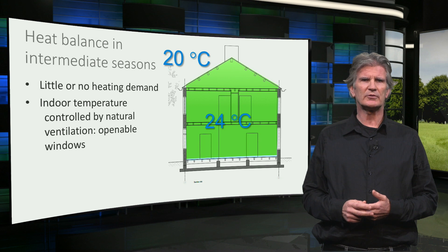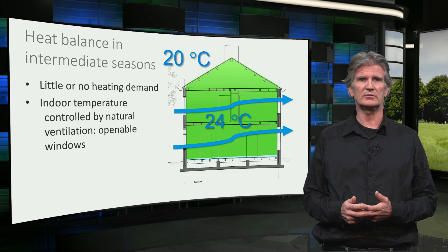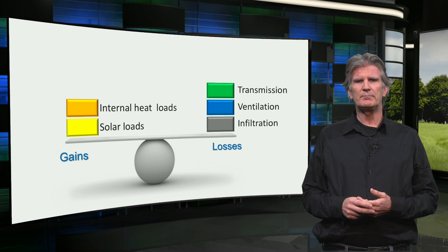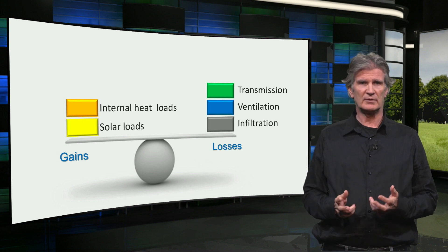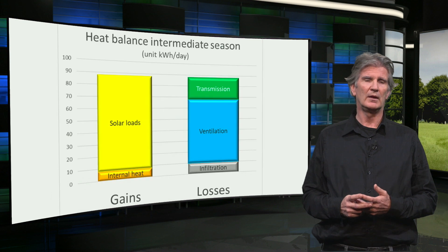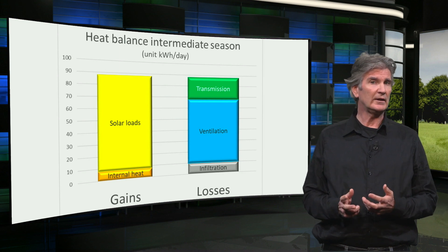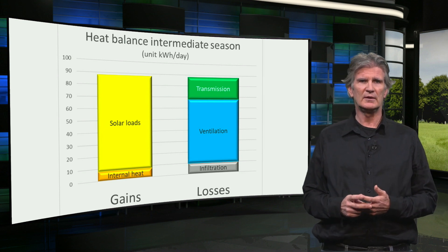In this case the indoor temperature is slightly higher than the outdoor temperature, and the indoor temperature is controlled by natural ventilation — just opening the windows. This is what the heat balance looks like in an intermediate season. On the gain side there are the solar loads and internal loads, and on the loss side there are transmission, ventilation, and infiltration losses. If we look at a typical day in spring or autumn, there is no heating or cooling — the heat gains by the sun and internal loads are balanced by the transmission loss and mainly the ventilation loss through the windows.